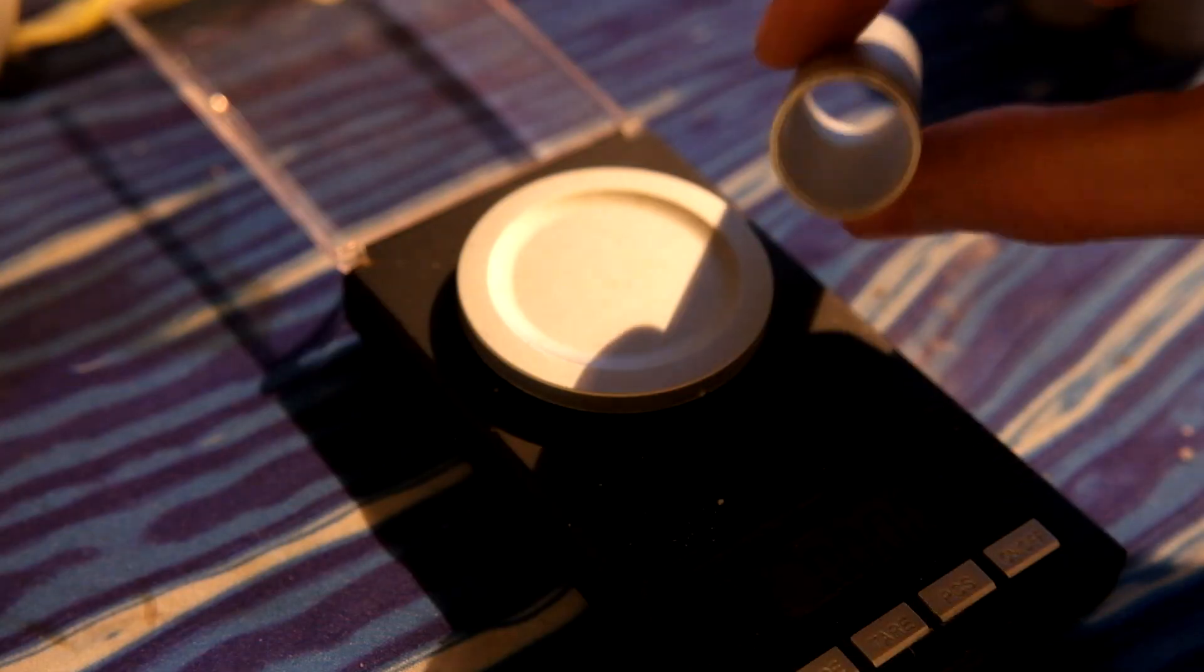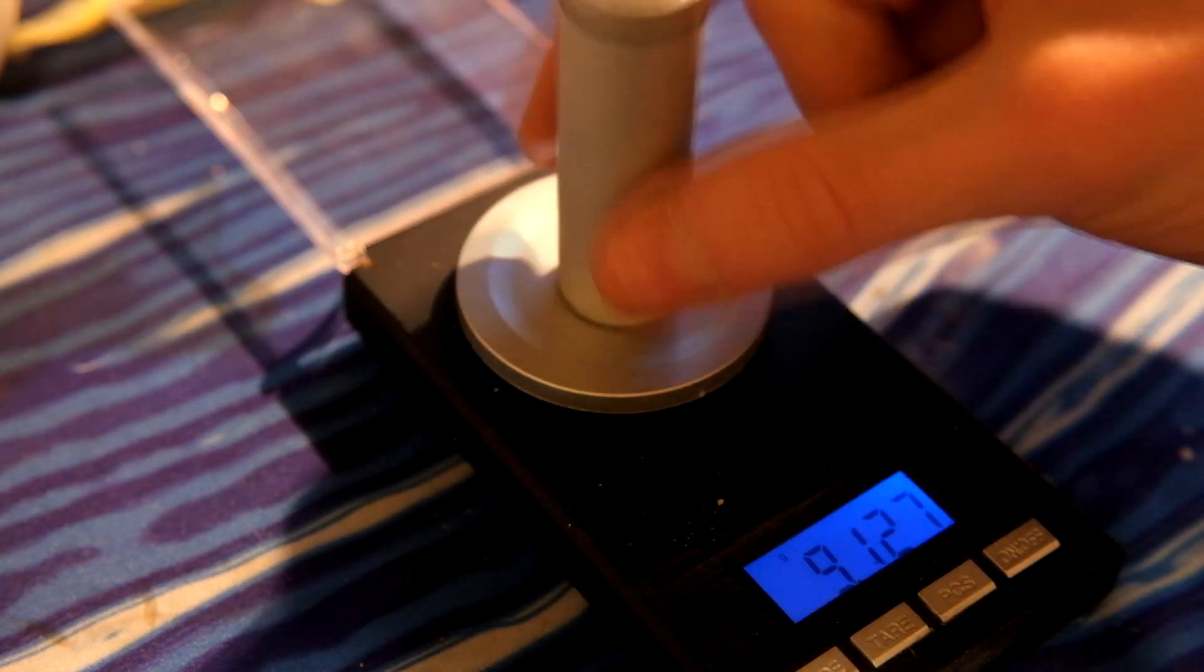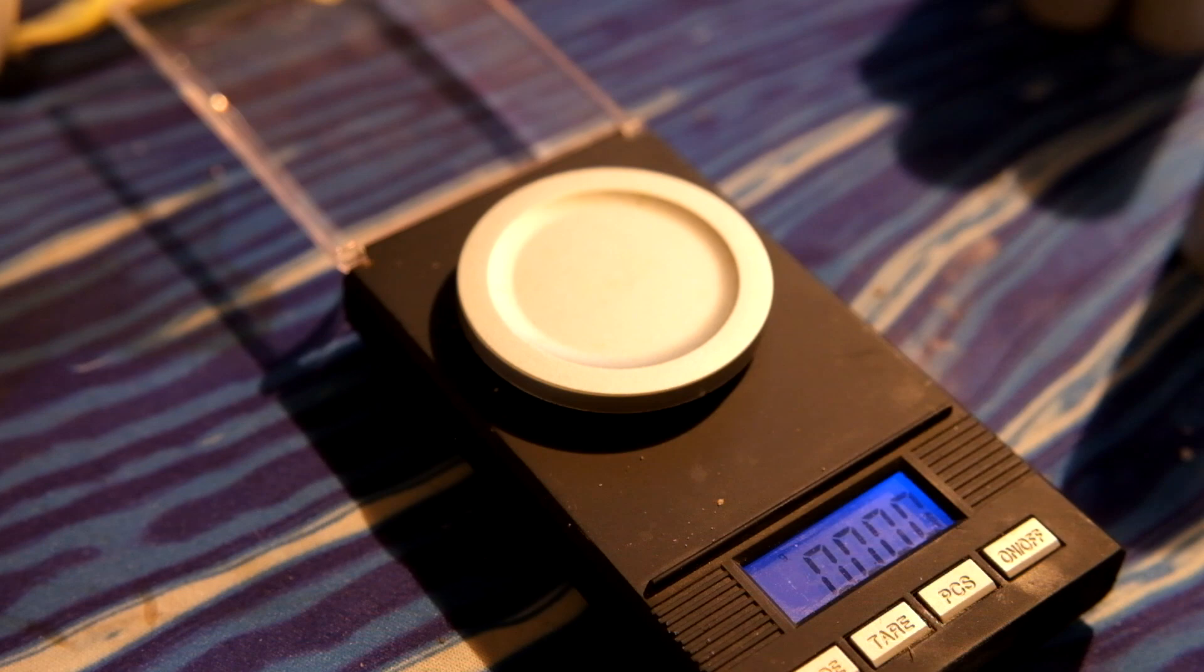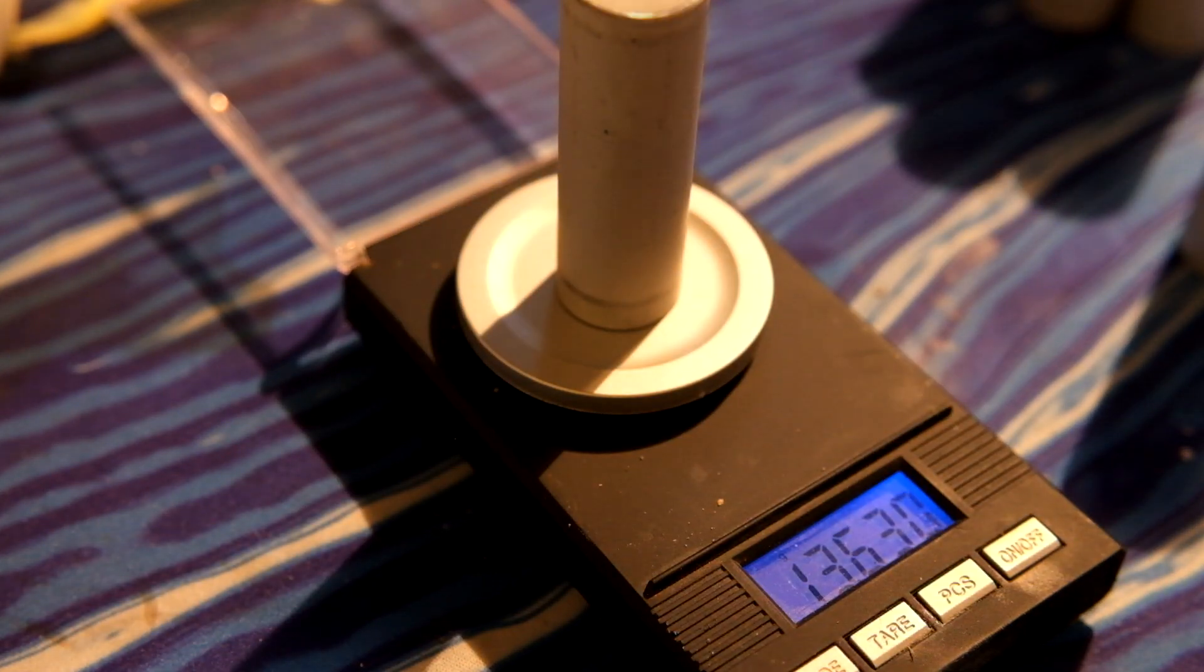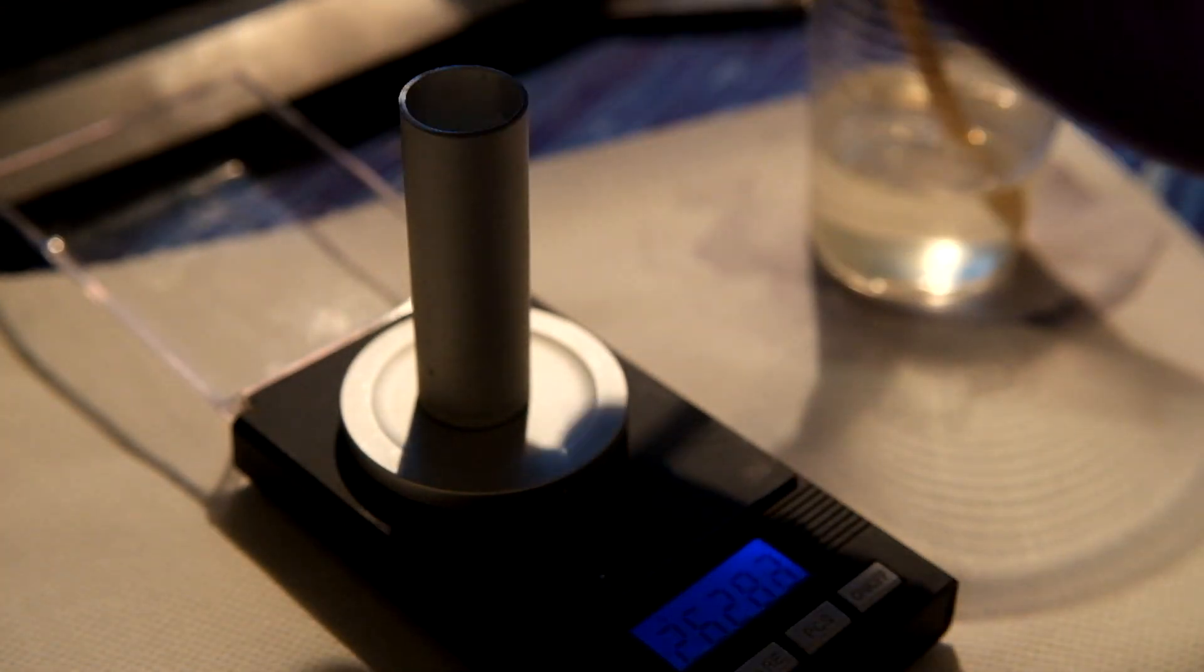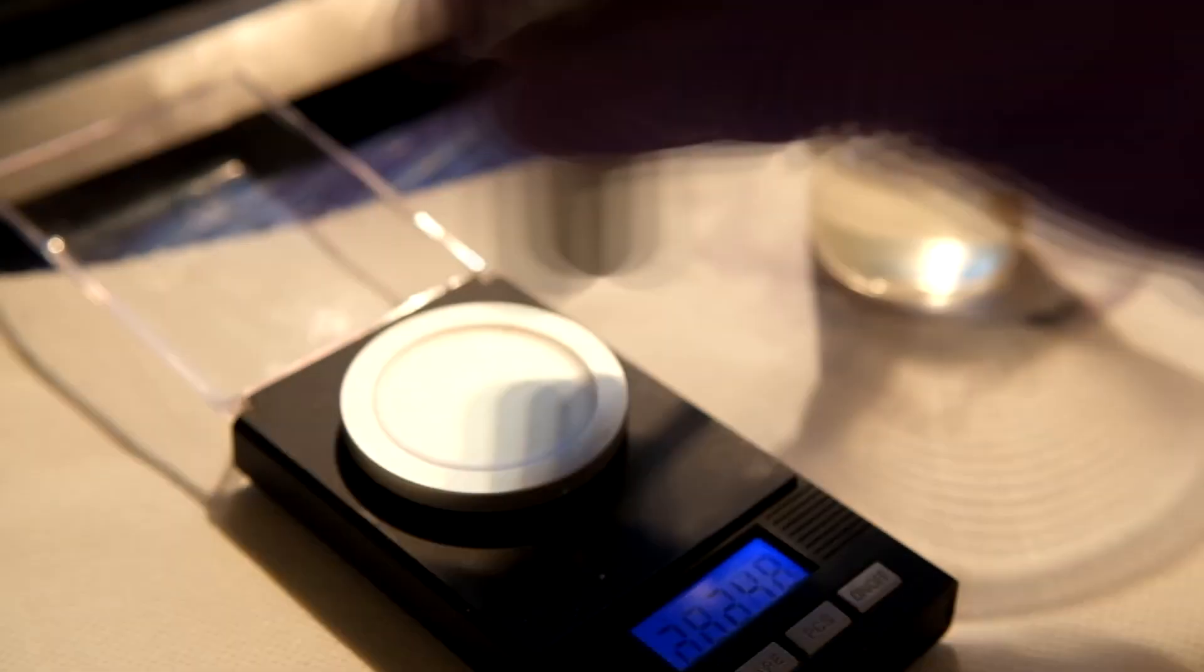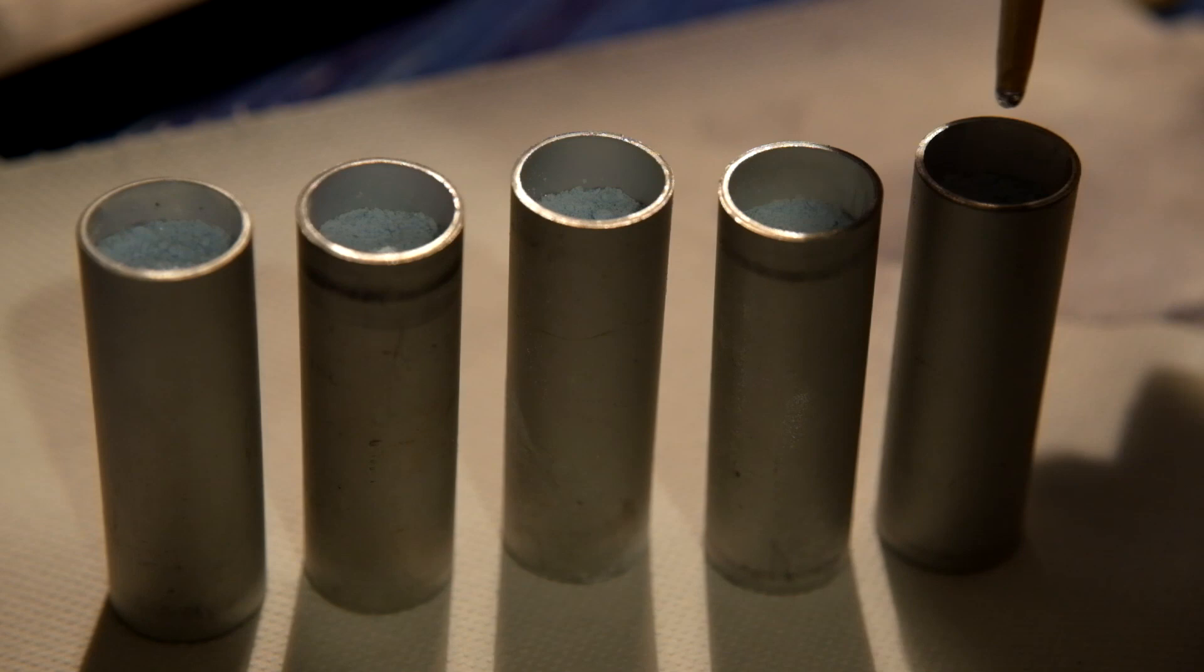If you just want to make functional rocket motors, this step is not important. But I want to analyze the motor performance and to do that, I need to know the exact mass of the propellant used. This will allow me to calculate values like the specific impulse of the motor in future videos. These motors ended up containing around 13 grams of propellant.